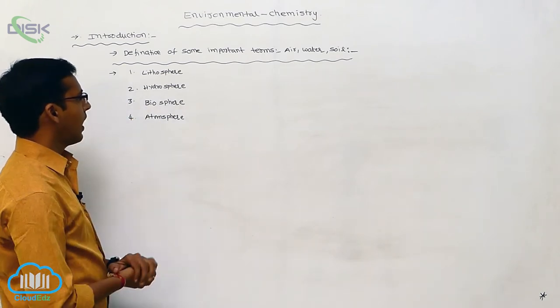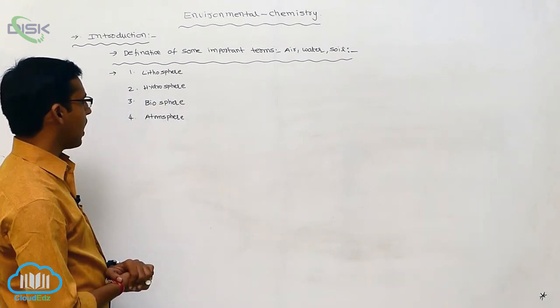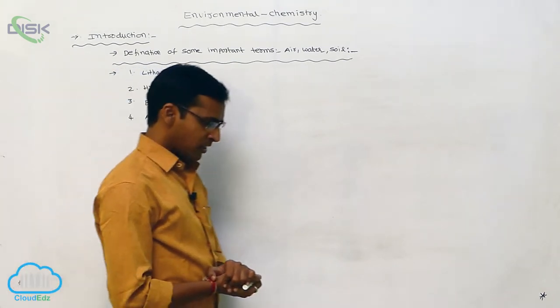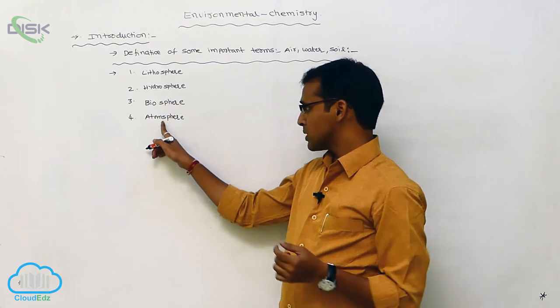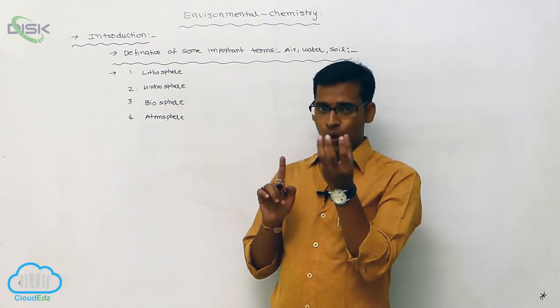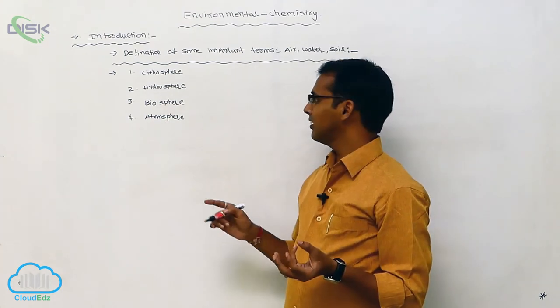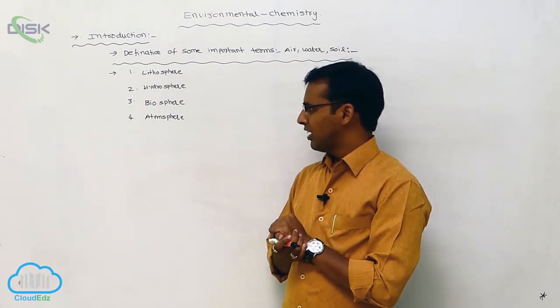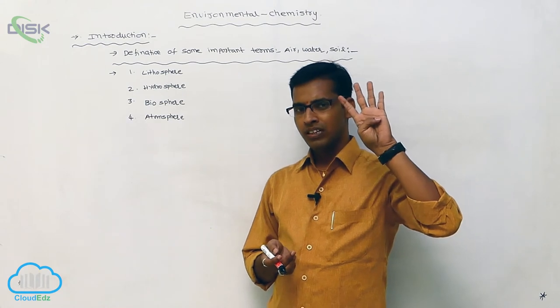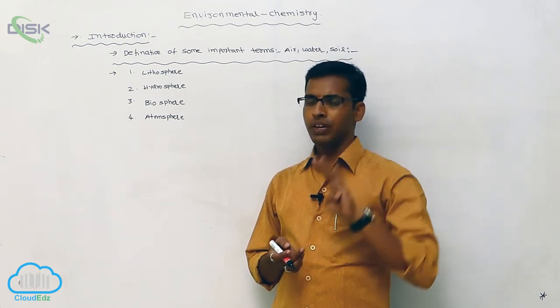One is lithosphere, hydrosphere, biosphere, atmosphere. In that first one atmosphere means that atmosphere is located around the earth. This atmosphere is containing 4 types of spheres.